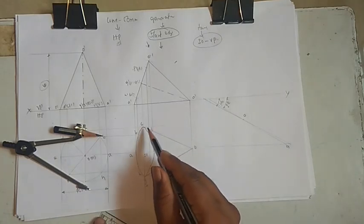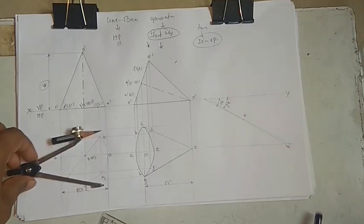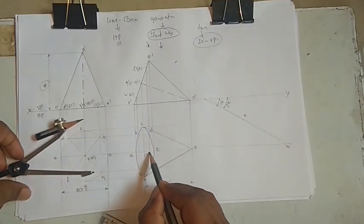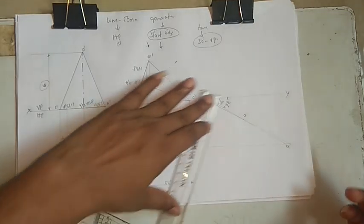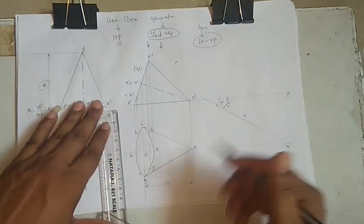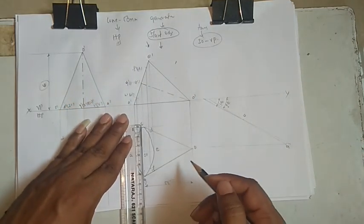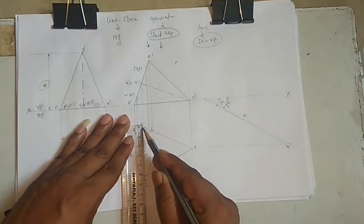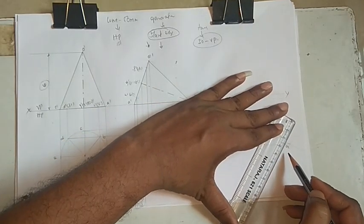Draw a line from O1 through O and extend it. Measure the resulting angle — it comes to around 33 degrees. Now we have the true inclination. To repeat the whole construction for the final position, drop a vertical line; we'll have one, two, three, four, five reference lines. The base is 50mm, so 25mm each side.